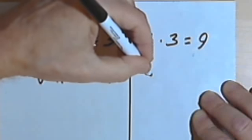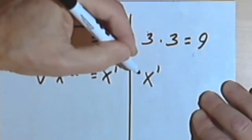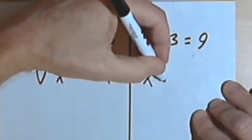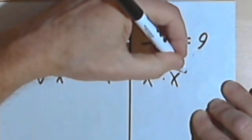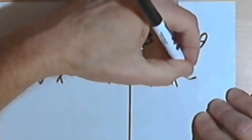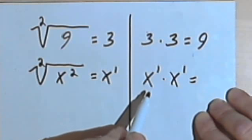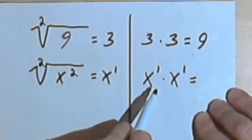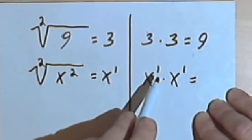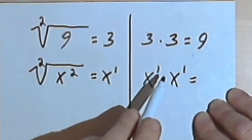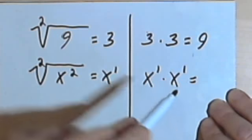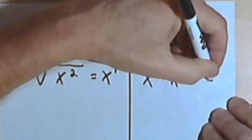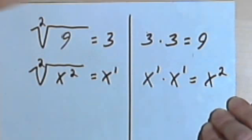Because if I take x to the first, that's a base of x raised to the first power, times x to the first. Well, if I have bases that are the same and I'm multiplying them, and they have exponents, I add their exponents. So I'm going to add 1 plus 1, and that's gonna give me 2. So x¹ times x¹ is x².